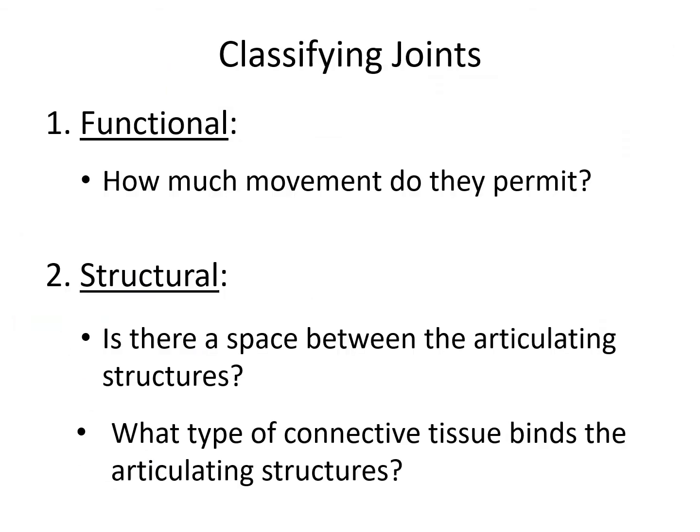When we're classifying joints we can do it based on several different characteristics. We can look at the functional aspects of the joint — how much movement occurs. We can look at the structural aspects — is there a space between the bones, what kind of connective tissue binds them together, etc.